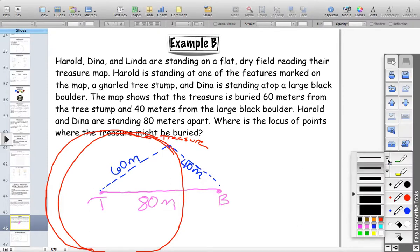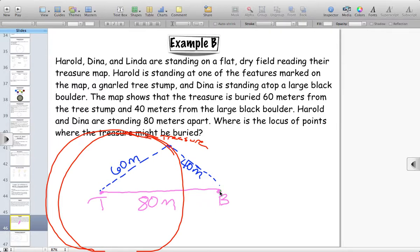On the other hand, you're also going to have a similar scenario with our boulder. The distance from the boulder to the treasure is 40 meters. Well, that could represent a radius of another circle that, from the boulder, 40 meters around is the treasure. So, Dina, if you turn around in a circle, 40 meters from any point that she's looking at would be the circle, would be the treasure.